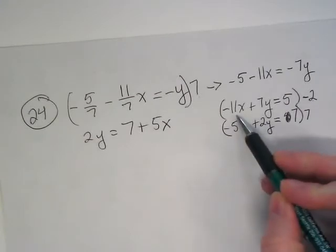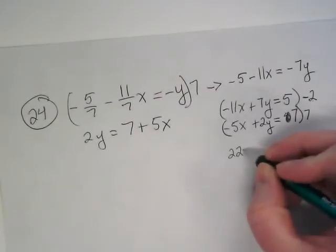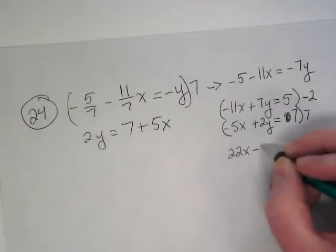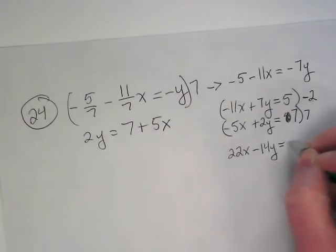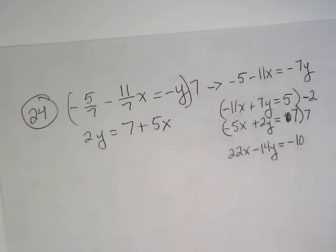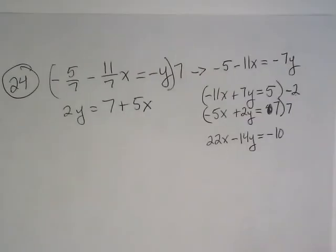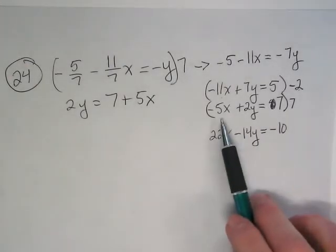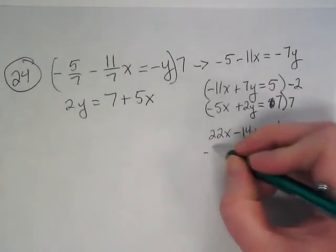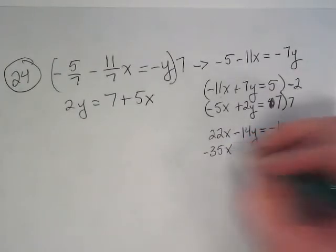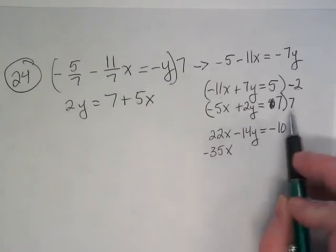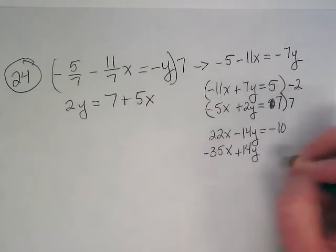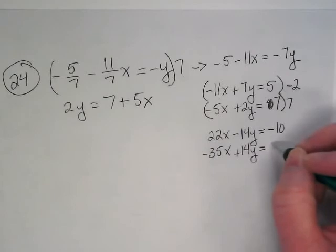Negative 2 times 11, negative 11, it's going to get me 22x minus 14y equals negative 10. Quick check, thumbs up if you're with me so far. It's a lot of steps, but you're understanding what we're doing, yes? Okay. Second equation, negative 5 times positive 7 is going to get me negative 35x. 2y times 7, 14y equals 49.